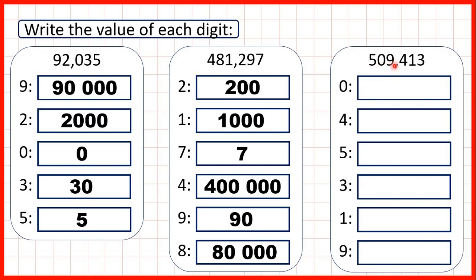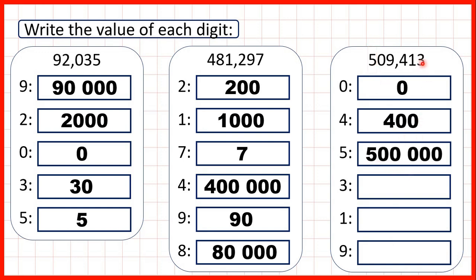Now, 509,413. We have a zero in our ten thousands place, but remember it doesn't matter what place value zero is written in — it still just represents zero. We have 4 in our hundreds, so that's 400. 5 in our hundred thousands, so that's 500,000. 3 in our ones, so that's 3. 1 in our tens, so that's 10. And 9 in our thousands, so that's 9,000.